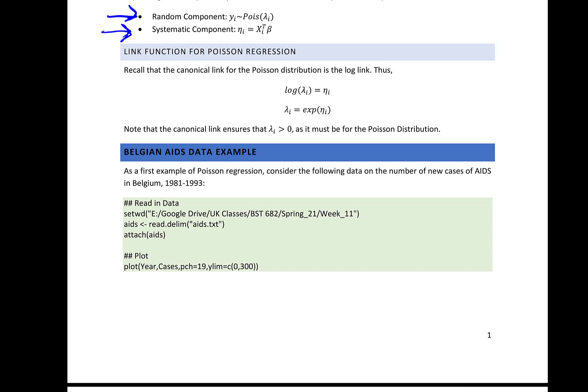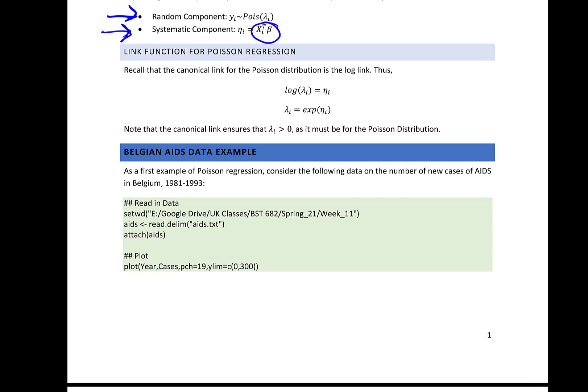Remember that nu_i is really x-transpose beta — that's where we bring in those explanatory variables. The canonical link ensures that lambda is going to be greater than zero, which is one of the restrictions for the Poisson distribution that we have to meet.